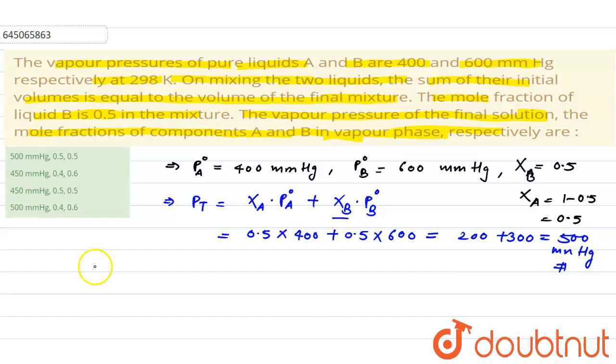Now we have to find out the mole fraction in vapor phase. Mole fraction of vapor phase, that is YA for A, it will be pressure of A divided by P total. So pressure of A, that is 400, sorry, into mole fraction, so 400 into 0.5 divided by P total that is 500.